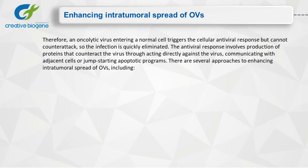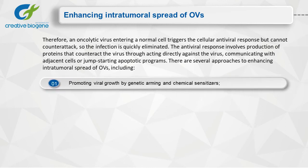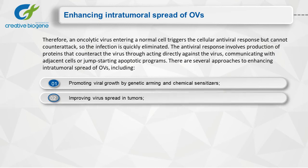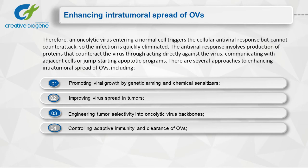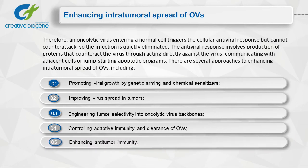There are several approaches to enhancing intratumoral spread of oncolytic viruses, including promoting viral growth by genetic arming and chemical sensitizers, improving virus spread in tumors, engineering tumor selectivity into oncolytic virus backbones, controlling adaptive immunity and clearance of oncolytic viruses, and enhancing anti-tumor immunity.